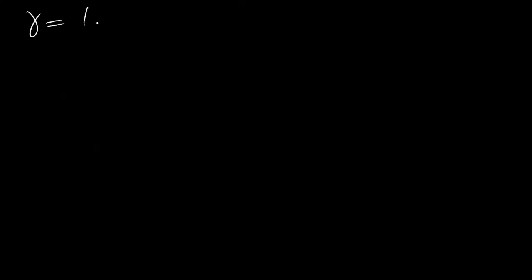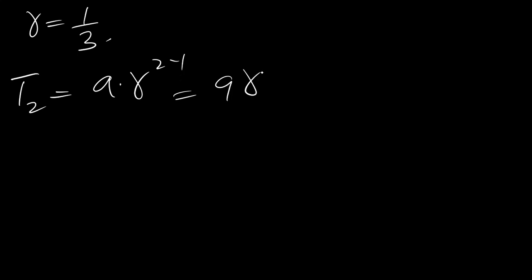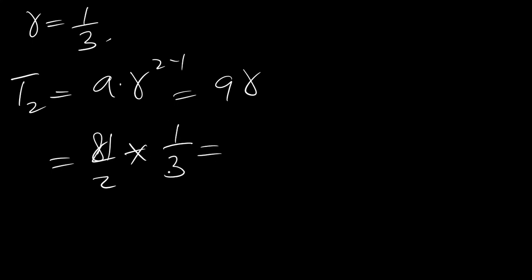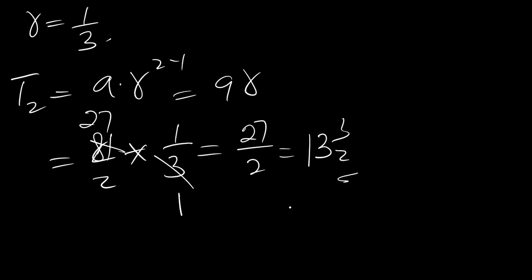So R = 1/3. To find the second term, which is A times R raised to (2-1) = AR: A is 81/2 times R which is 1/3. 81 divided by 3 is 27, so we have 27/2, which gives us 13 and 1/2. So 13.5 is the second term and that is the final answer.